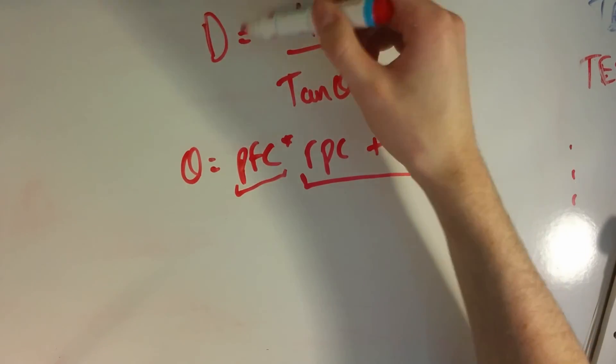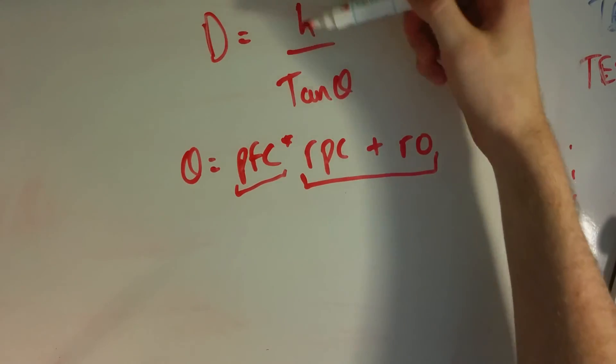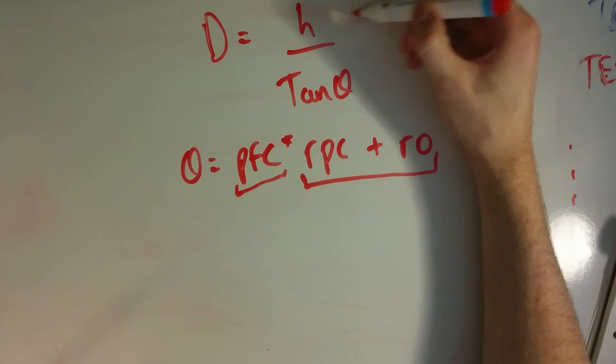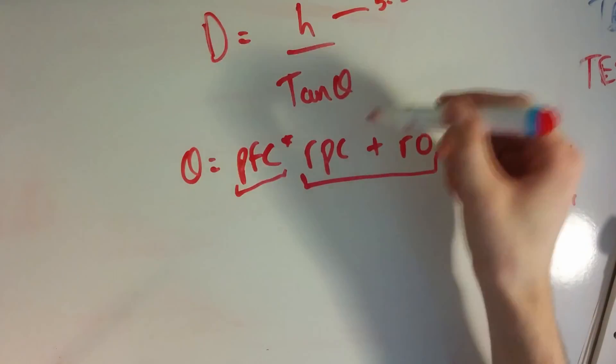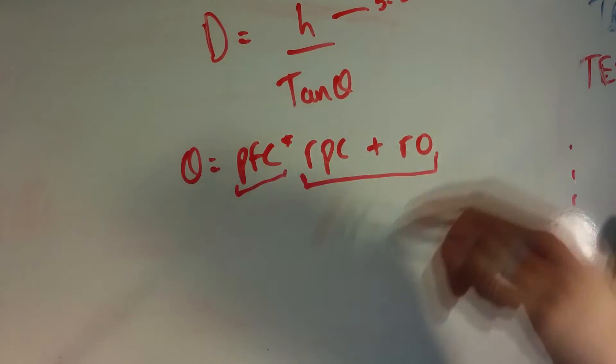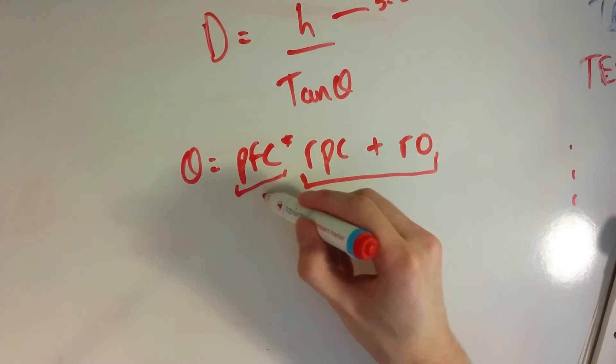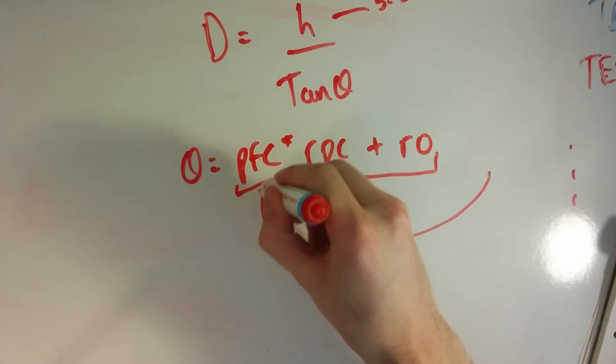h we know is just 5.33 centimeters, and then tan theta. And then for every value of pfc - for every value of pfc, which is where's the laser dot, how far has it moved, that will give you your value of d.